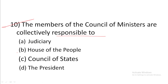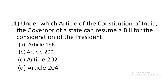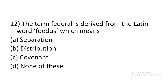Question 11: Under which article of the Constitution of India can the Governor of a state reserve a bill for the consideration of the President? Answer is B: Article 200. Question 12: The term 'federal' is derived from the Latin word 'foedus', which means —